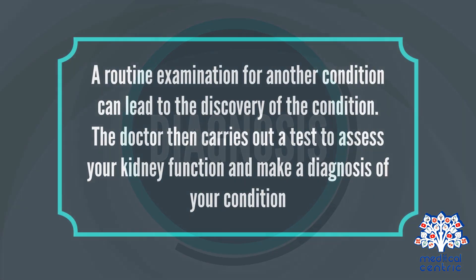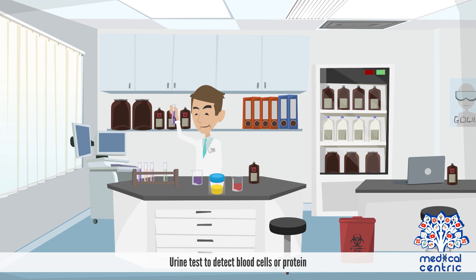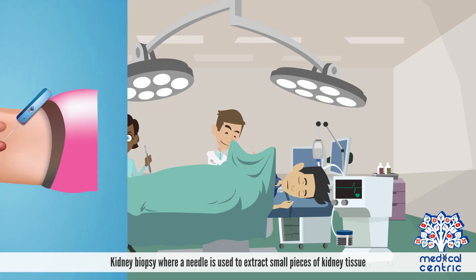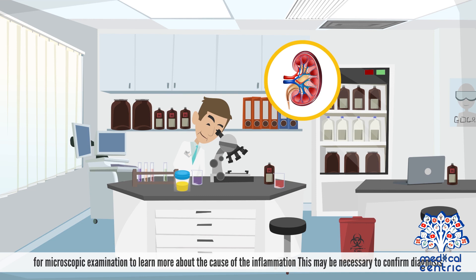A routine examination for another condition can lead to the discovery of glomerulonephritis. The doctor then carries out tests to assess kidney function. Tests may include a urine test to detect blood cells or protein, a blood test to measure levels of creatinine, urea nitrogen, and albumin, and a kidney biopsy, where a needle is used to extract small pieces of kidney tissue for microscopic examination to confirm diagnosis and learn more about the cause of inflammation.